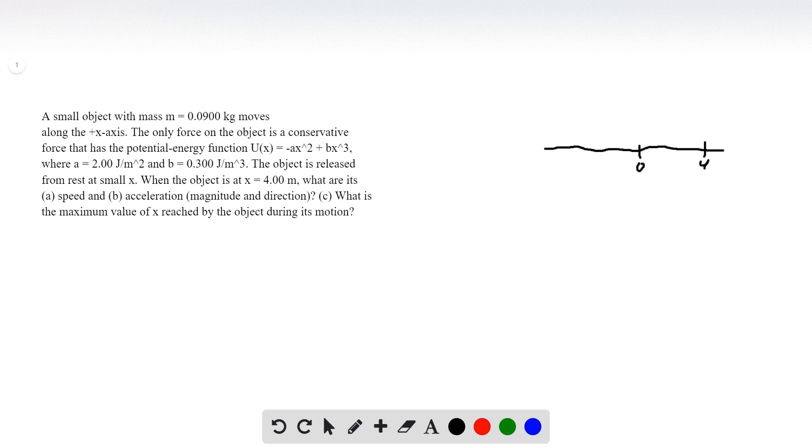The object is released from rest at small x, and when it says small x, we assume very close to 0 is what it means. And when the object is at 4 meters, what are the speed and acceleration of the object?